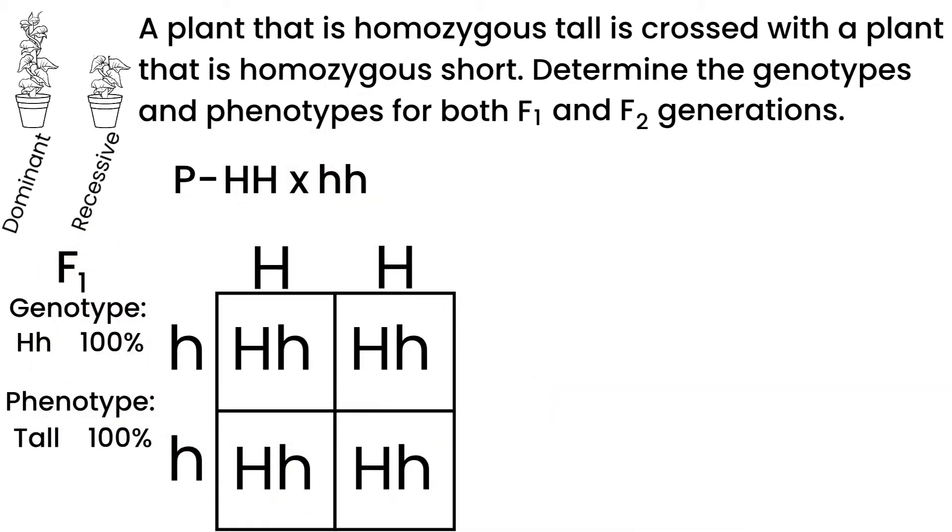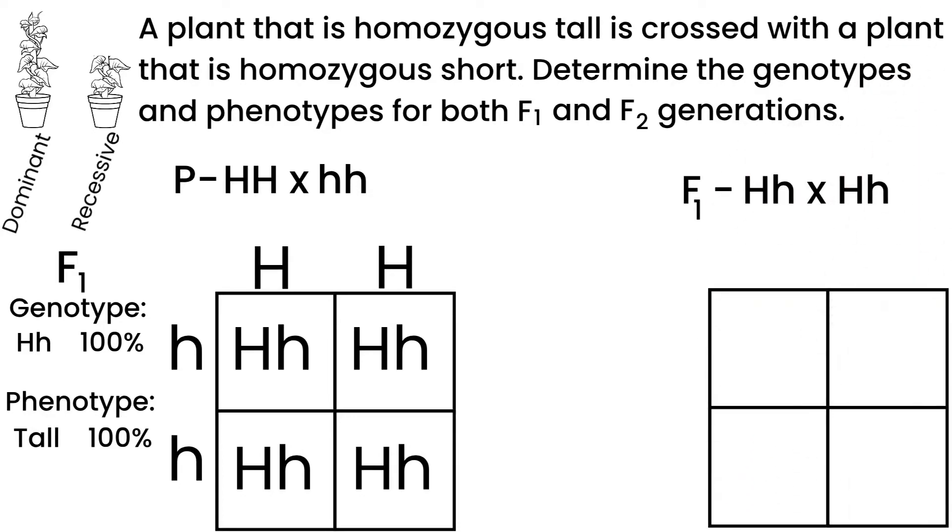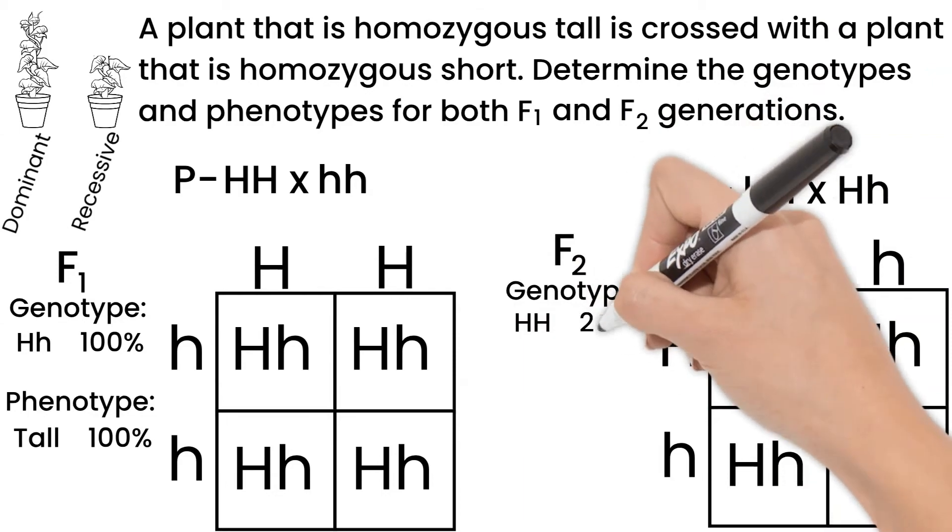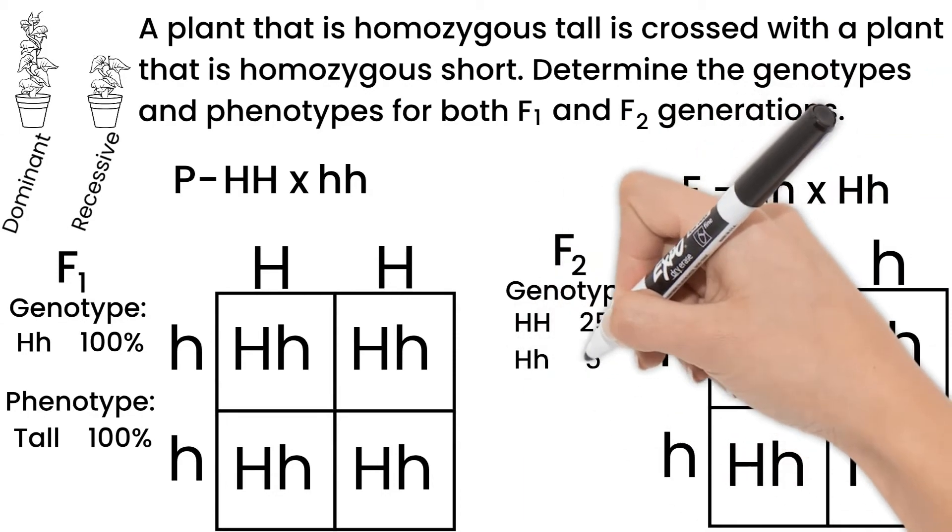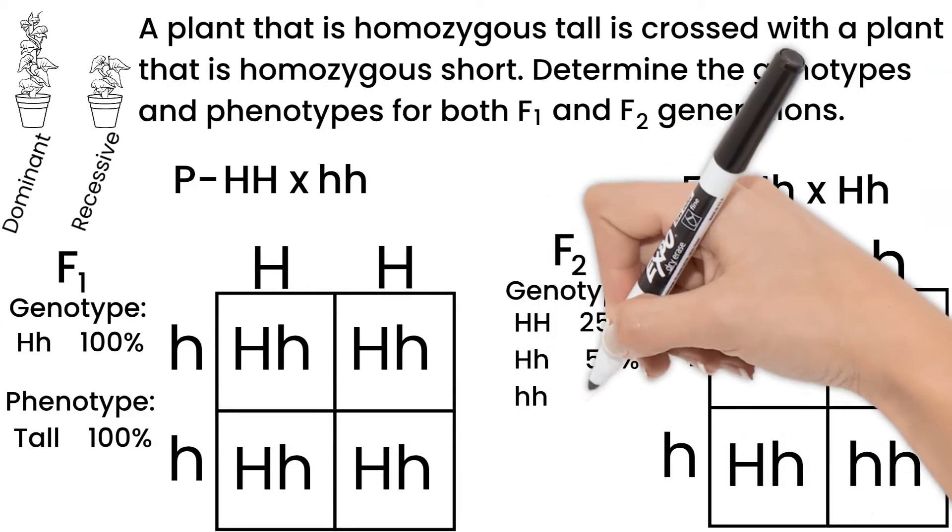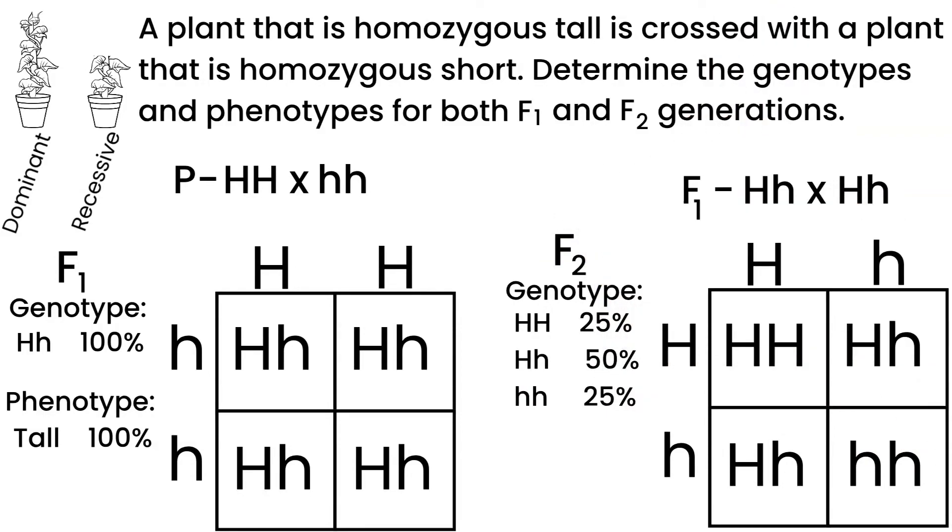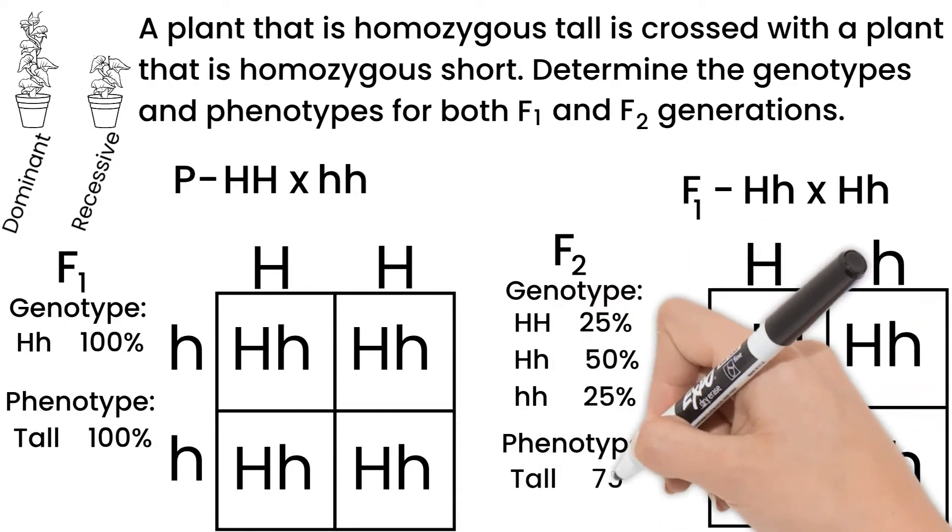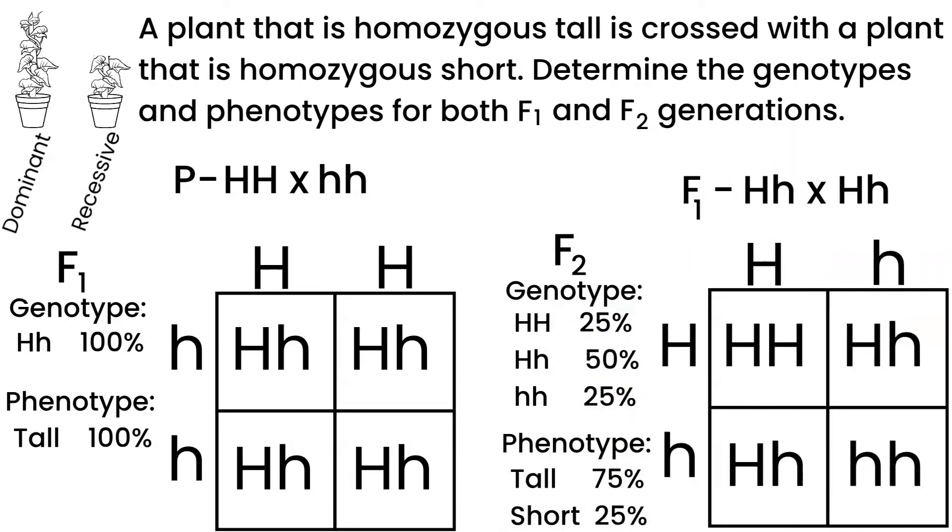To determine our F2 generation, we take two of our F1s and cross them. So now we are crossing two heterozygous genotypes. We get 25% chance of homozygous dominant genotype, 50% for heterozygous, and 25% for homozygous recessive. Our phenotype for F2 is 75% tall and 25% short.